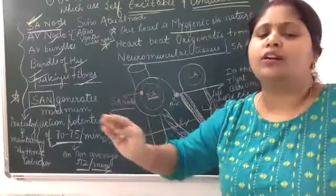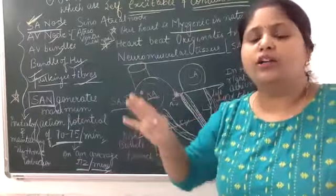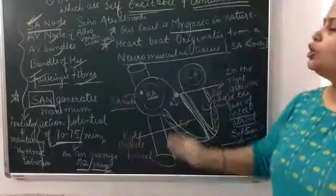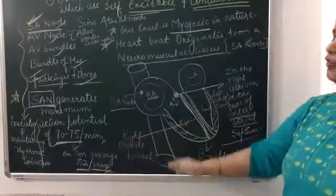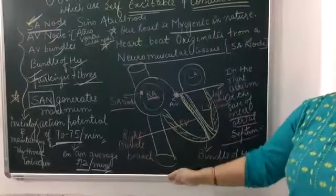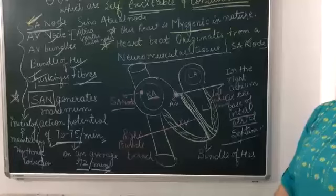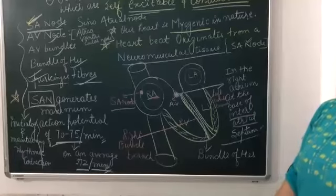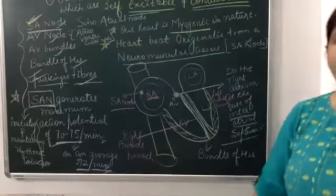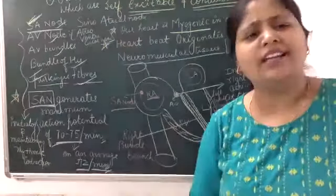After two years, the heartbeat matches with the adult one — that is 72 per minute. So the rate of heartbeat in an adult human being is 72 per minute. But in the case of the fetus, it is 140 to 160 per minute.